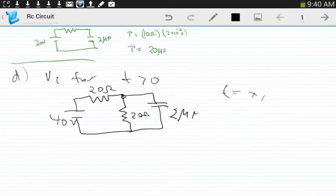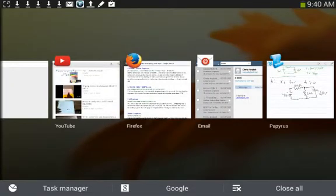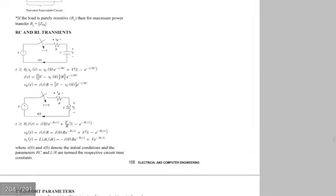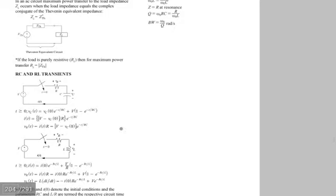And we can look up that formula. That formula is going to be on page 198 in the RC and RL transient area. We have an RC circuit, so we want to get it in this form.